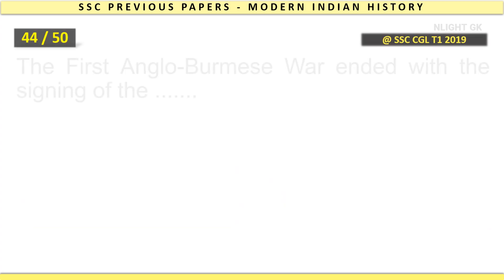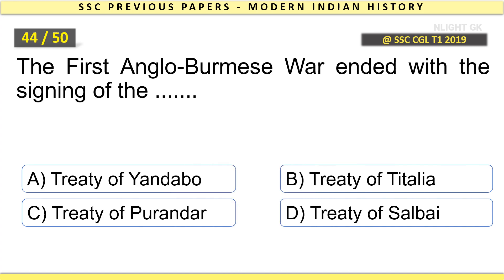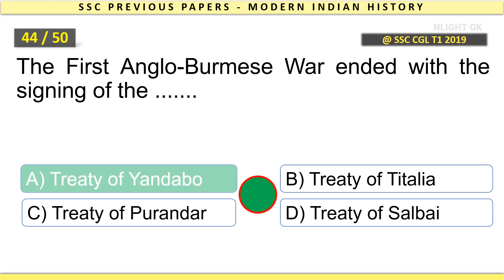The First Anglo-Burmese War ended with the signing of the Treaty of Yandabo.